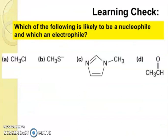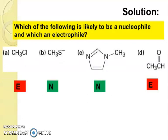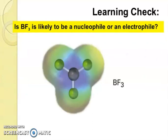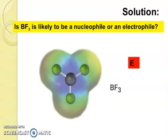So learning check, which of the following is likely to be a nucleophile and which an electrophile? So answer is E for electrophile and N for nucleophile. Further learning check, is BF3 likely to be nucleophile or electrophile? Answer is electrophile.